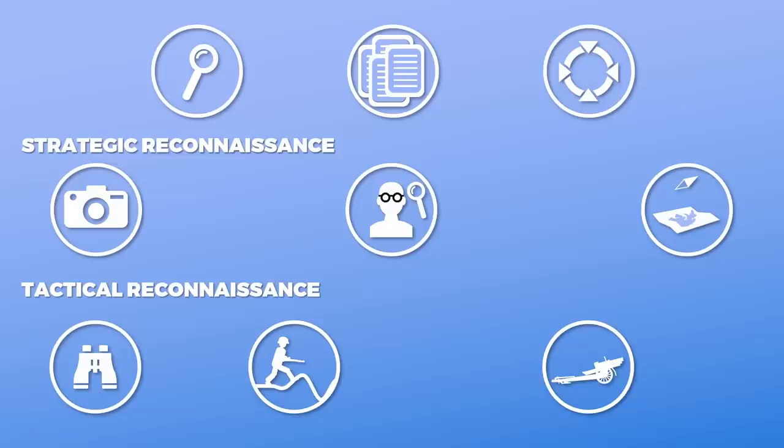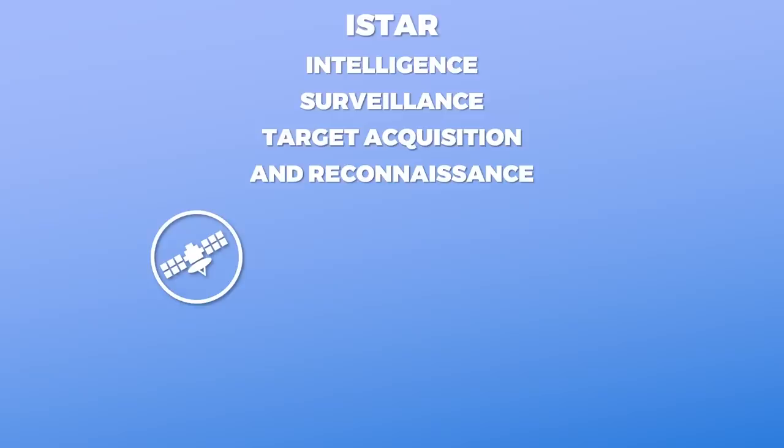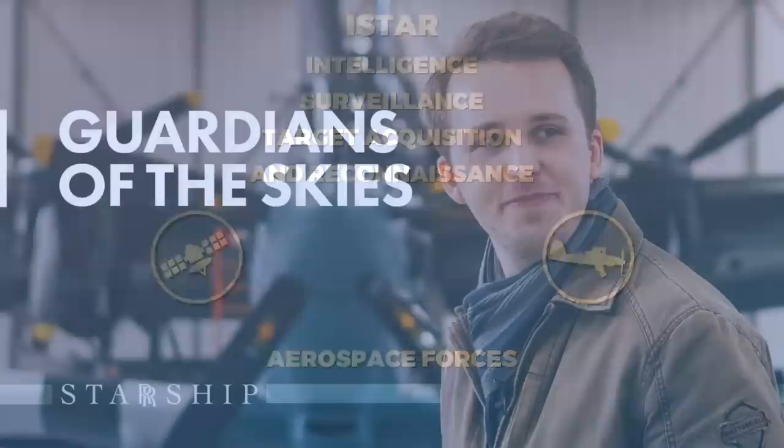Nowadays, one acronym used for this role is ISTAR, which stands for Intelligence, Surveillance, Target Acquisition and Reconnaissance. It incorporates also satellite coverage, which won't replace regular aircraft or drones due to the fact that satellites have known paths and time windows, whereas recon aircraft can show up rather unpredictably. Some forces like the RAF and the US Air Force now consider themselves aerospace forces.